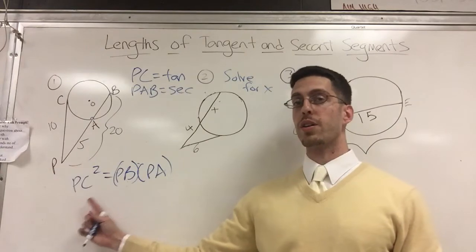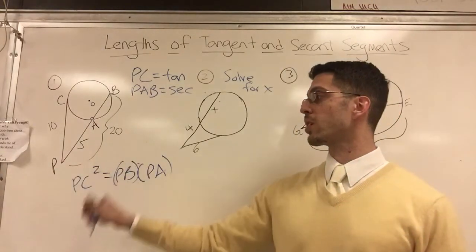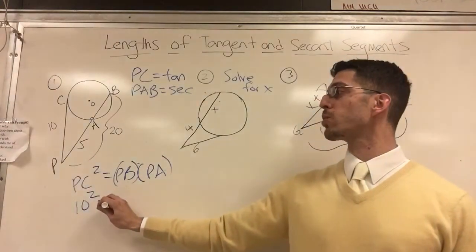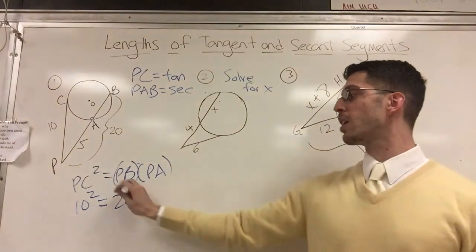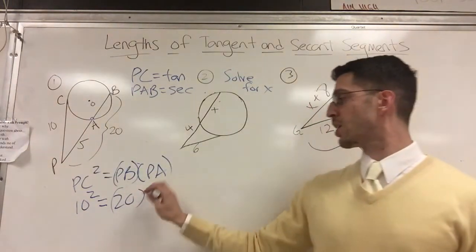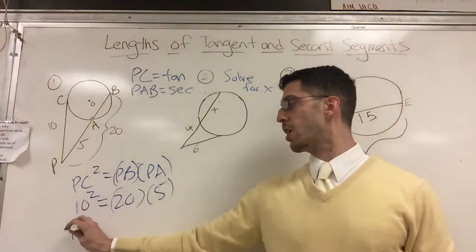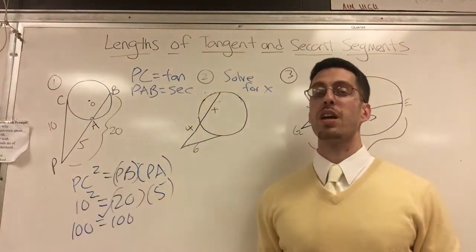Let's look at numbers. 10 squared equals what? 20 is the entire thing times the outside which is 5. Obviously not drawn to scale, I don't have a scale, didn't use it. Let's see: 100 equals 100. We are good, I proved my theory.